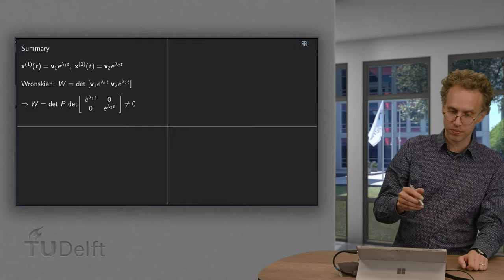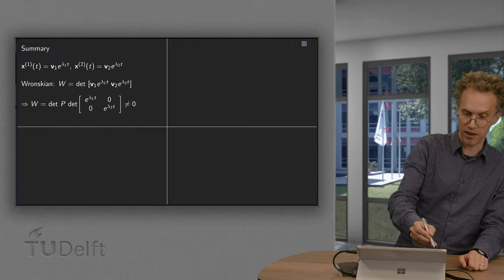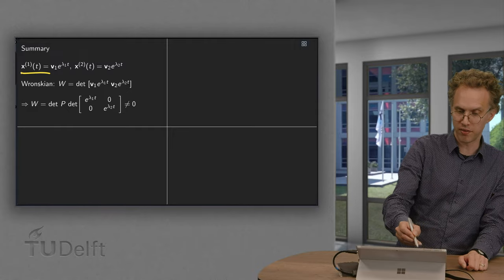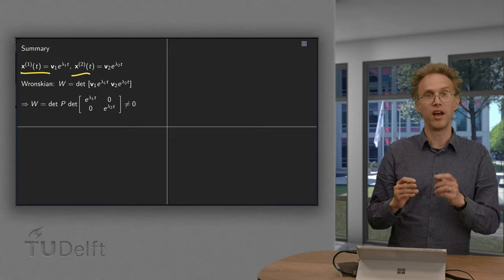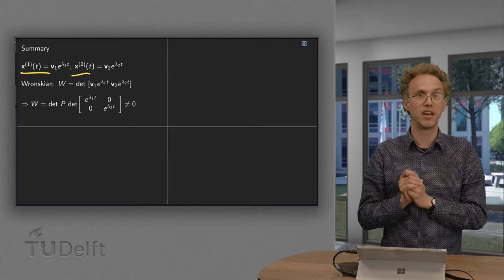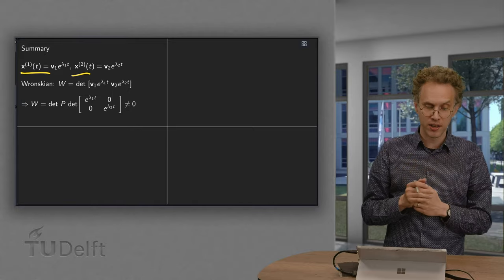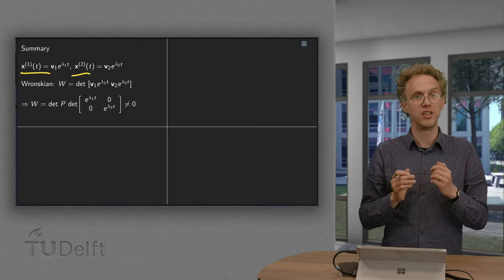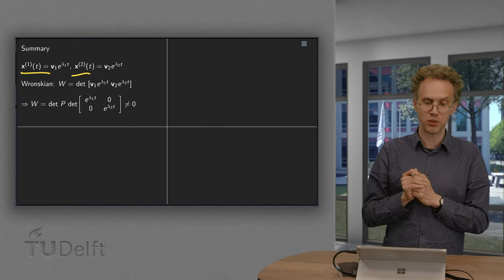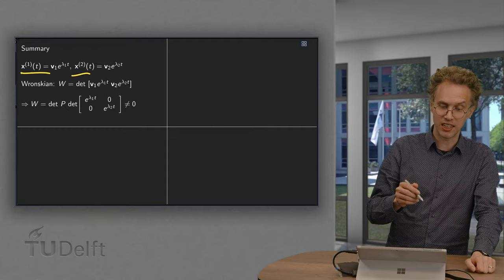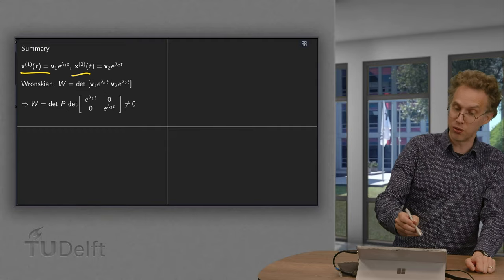So in summary, if you have our independent solutions x1 and x2 which you can form using the eigenvectors of your matrix, then we know that the general solution is a linear combination of this x1 and x2. And we can in fact check that these are independent by checking the Wronskian.